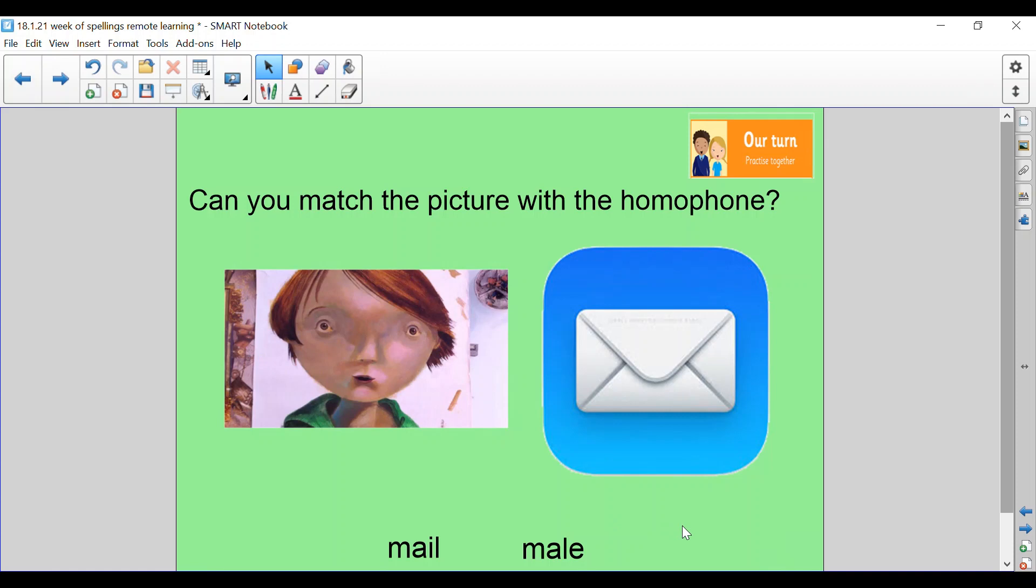The next one is male. Leon is a boy, which means he is male. And we might receive post or an email. Which one matches which picture? Okay, let's have a go together. Leon is a boy, which we mean a male. Can you say the letters names with me? M-A-L-E. And if we receive a letter, like mail or an email, it's M-A-I-L, mail.